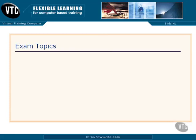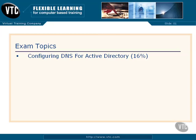Let's take a look at the topics that you're going to see on your exam and exactly the kinds of questions and what percentage weight these questions will carry. You're going to get questions on configuring DNS for Active Directory. Roughly, this is going to be about 16% of the questions. So if you get 100 questions on the exam, you can expect to see around 16 of them related to DNS and its Active Directory interaction.